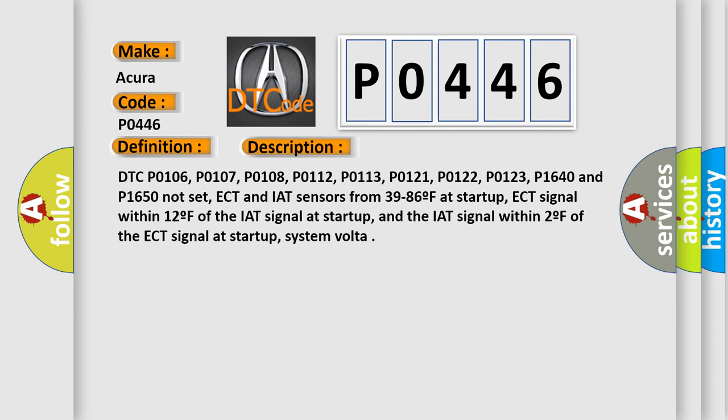DTC P0106, P0107, P0108, P0112, P0113, P0121, P0122, P0123, P1640 and P1650 not set. ECT and IAT sensors from 39 to 86 degrees Fahrenheit at startup, ECT signal within 12 degrees of the IAT signal at startup, and the IAT signal within 2 degrees of the ECT signal at startup, system voltage.